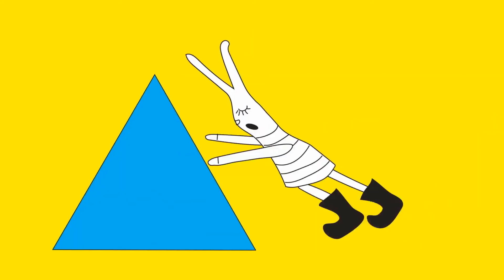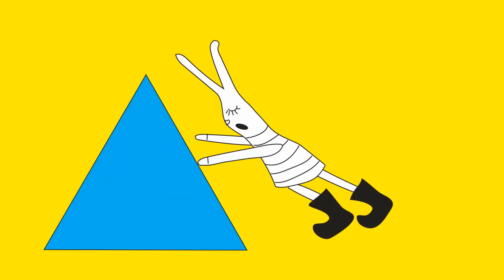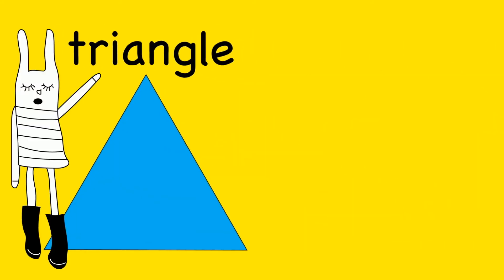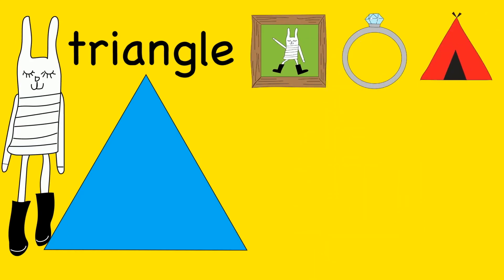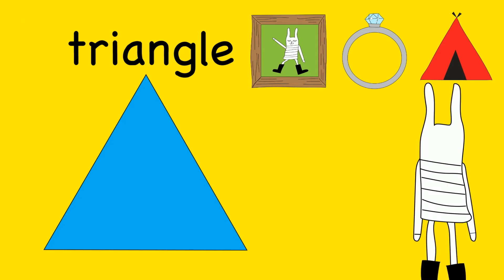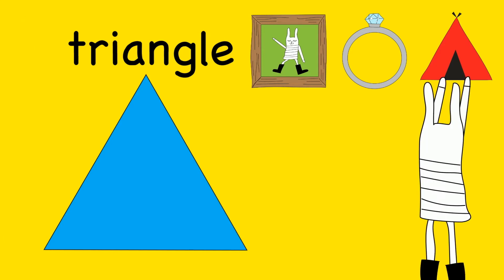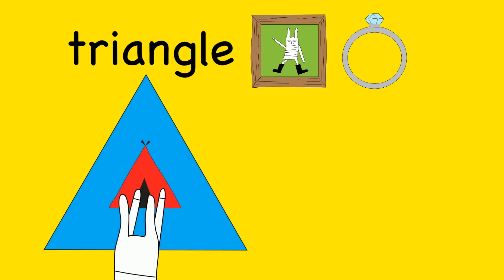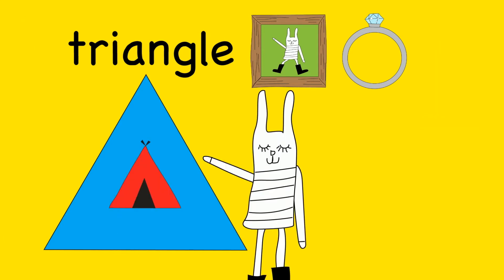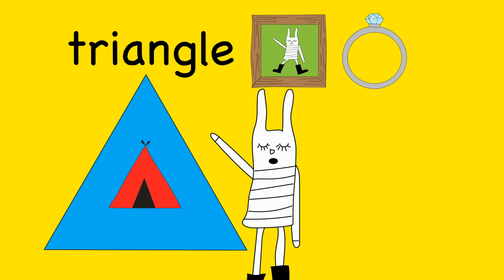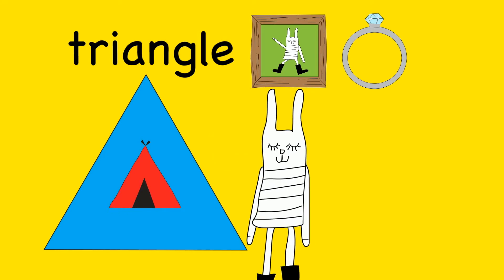I see a triangle. Can you show us an object that is shaped like a triangle? A tent is shaped like a triangle.